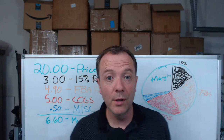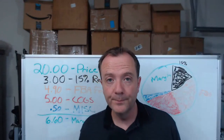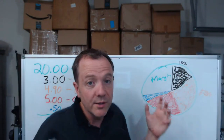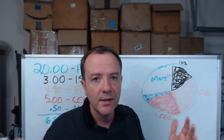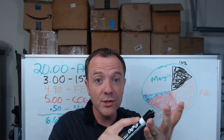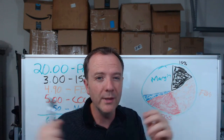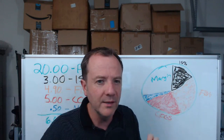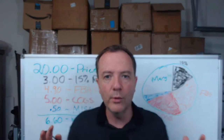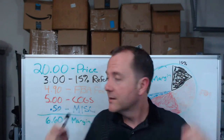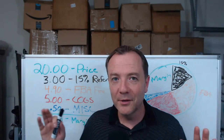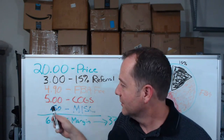Then we've got $5 going to cost of goods sold — basically the cost of your product. Think of the product cost plus getting it shipped to you; we'll call it your landed cost. In this case, it's about a quarter of the selling price. It might be different for you — we're all a little different — but just follow along this logic.